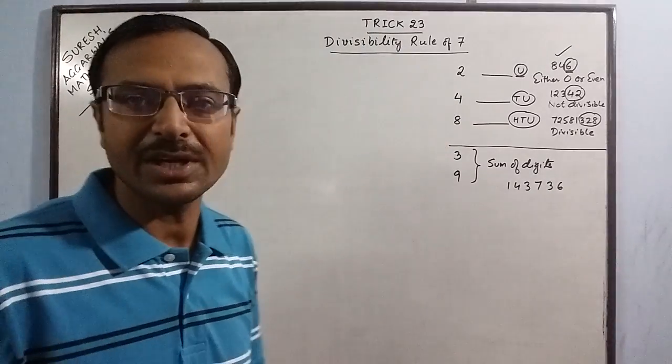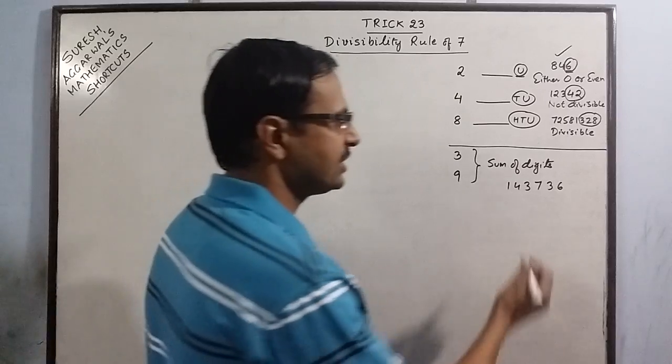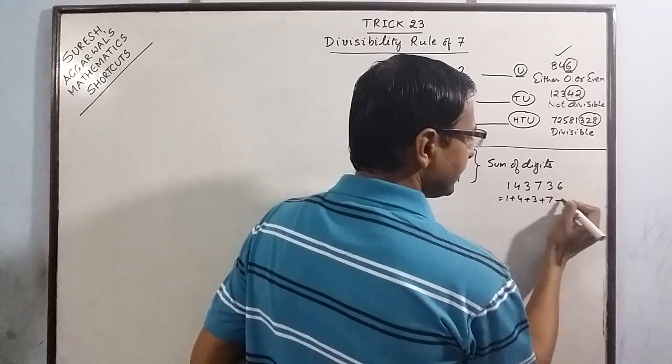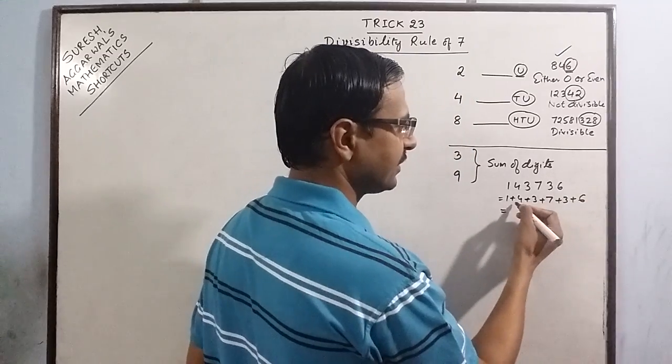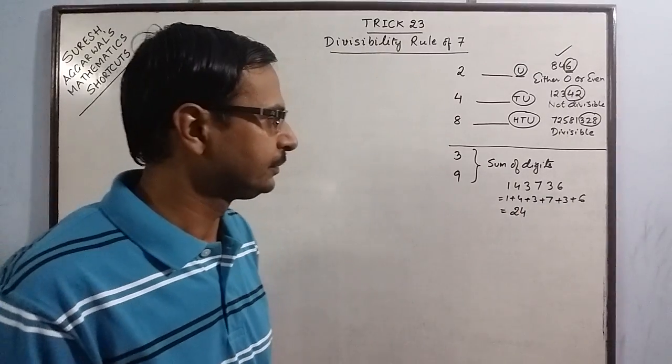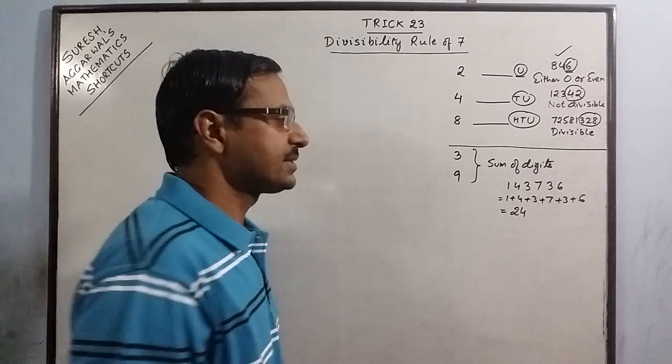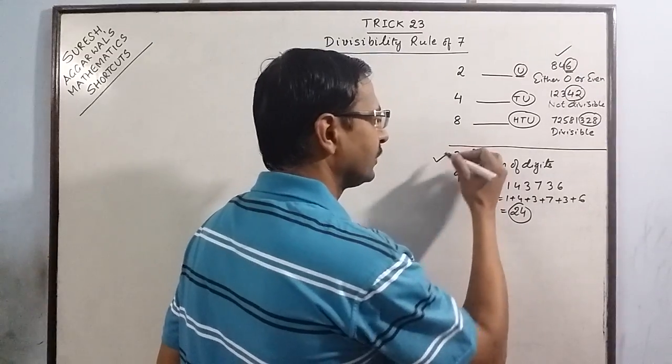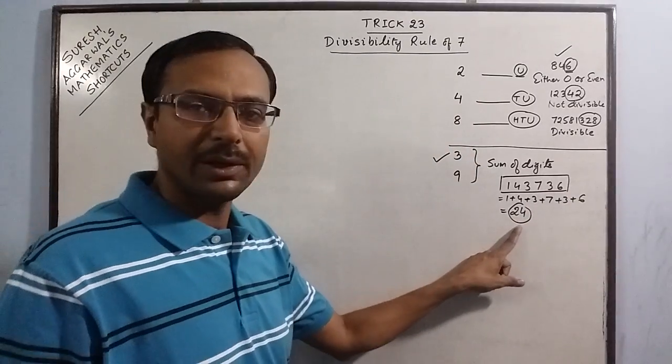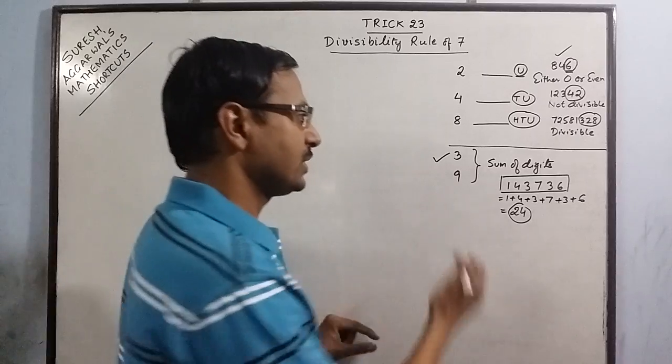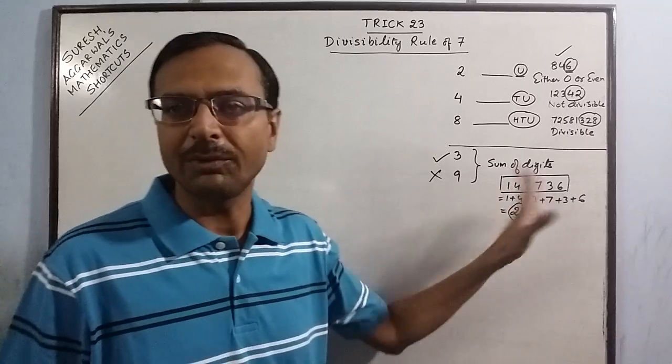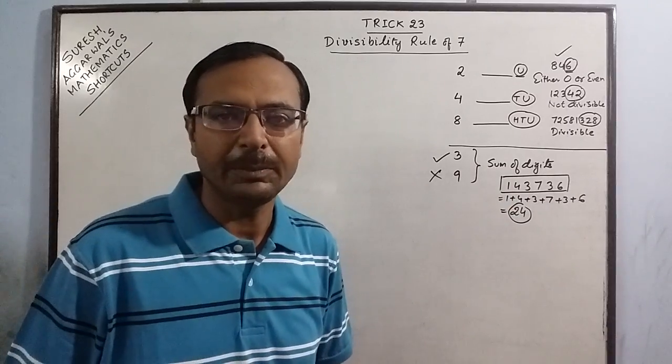And we have to check whether this number is divisible by 3 or not. So we just total the digits: 1 plus 4 plus 3 plus 7 plus 3 plus 6. This gives us 24. Now 24 is divisible by 3, so the entire number is divisible by 3. But 24 is not divisible by 9, so this number is not divisible by 9. So we have to check the sum of digits. Now this is very common rule, can be found in all books.